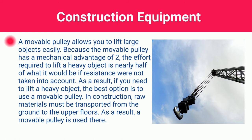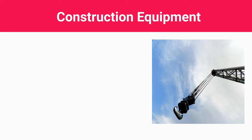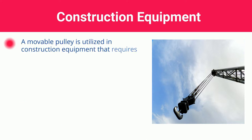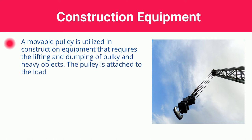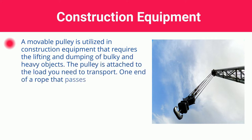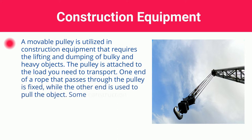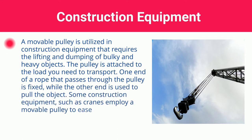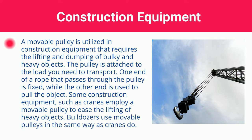In construction, raw materials must be transported from the ground to the upper floors. A movable pulley is used there. A movable pulley is utilized in construction equipment that requires the lifting and dumping of bulky and heavy objects. The pulley is attached to the load you need to transport. One end of a rope that passes through the pulley is fixed, while the other end is used to pull the object. Some construction equipment, such as cranes, employ a movable pulley to ease the lifting of heavy objects. Bulldozers use movable pulleys in the same way as cranes do.